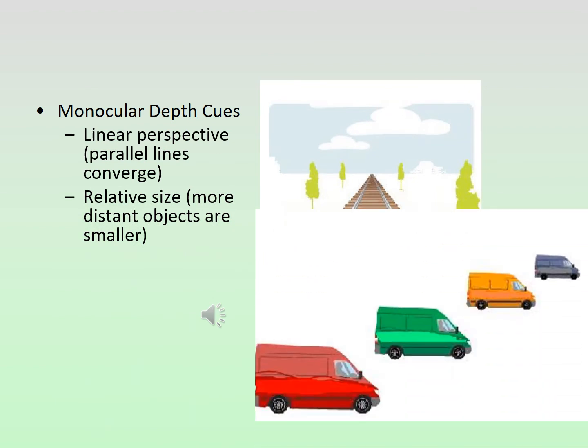We can also see depth and distance with just one eye — that would be a monocular depth cue. An artist can capture this very well. If you draw train tracks, they look like they're going to converge in the distance — that's linear perspective, which applies any time you have parallel lines. But the further away something gets, the smaller it gets too.